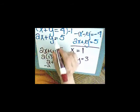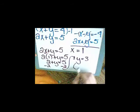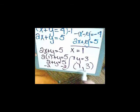So the solution for this system of equations is x equals 1, y equals 3. Remember it's an ordered pair because if we graphed them that's where they would intersect at.